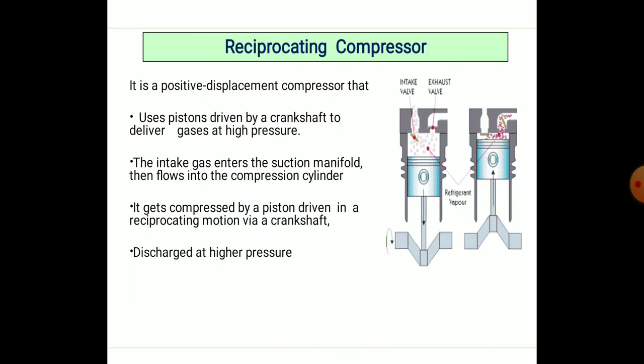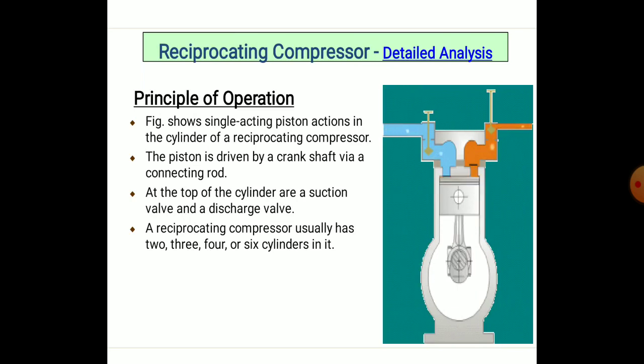Reciprocating compressors use a piston driven by a crankshaft to deliver gases at high pressure. The intake gas enters the suction manifold, then flows into the compression cylinder where it gets compressed. The gas — most often considered to be air — is compressed by the piston driven in reciprocating motion via the crankshaft, and discharged at high pressure.